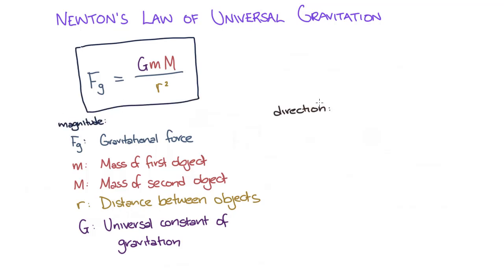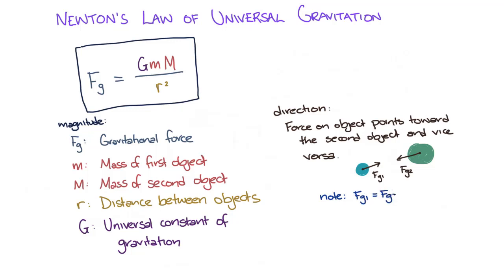As for the direction of the force, the force on both of the objects, the Earth and the asteroid in our example, point toward the other object due to their mutual attraction. Note that the force on both of the objects is equal in magnitude, though it points in the opposite direction.